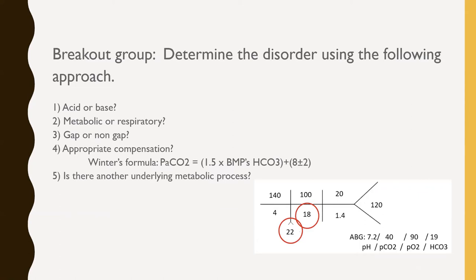We're going to challenge you to rack your memory and work through this acid-base disorder as a group. I'm breaking you into breakout groups to use this approach: number one, figure out if it's an acid or base; number two, figure out if it's metabolic or respiratory; number three, figure out if it's gap or non-gap; number four, decide if you have appropriate compensation; and number five, look to see if there's another underlying metabolic process.